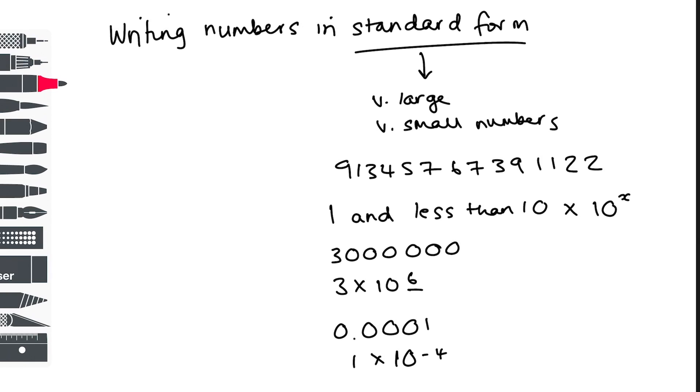When we have a positive power, that makes the number much larger. If you've got a negative power, you'll be looking at a very small number, one that includes a decimal point. I'm now going to show you how to work out how to write various numbers in standard form.